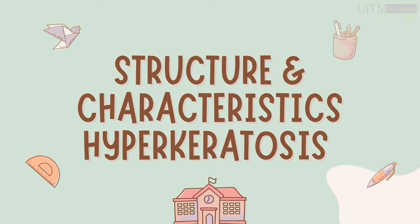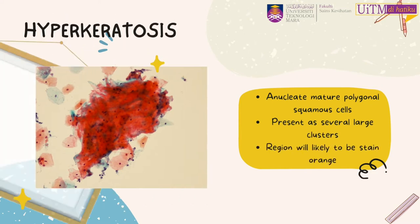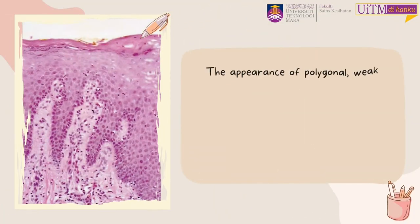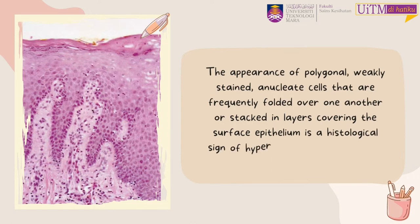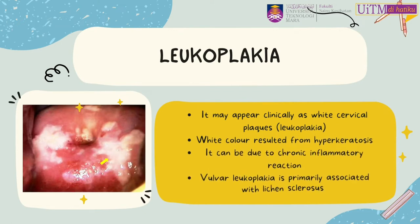Identification of hyperkeratosis is done by observing clusters of cells of more than 10 anucleated squamous cells. These cells are most likely to be eosinophilic or orangophilic, and can mimic the appearance of empty space or ghost nuclei. In histology, it is identified by observing static layers of anucleated squamous cells at the top of the surface epithelium. Microscopically, hyperkeratosis is identified by the appearance of white patches, also known as leukoplakia, in which the white colour is due to hyperkeratosis formation.